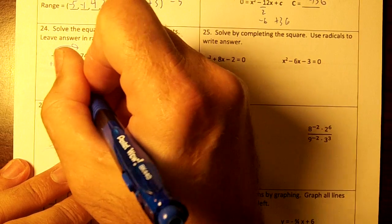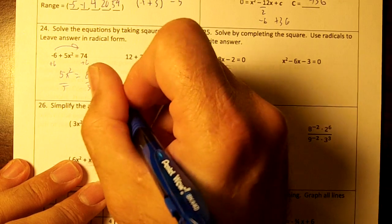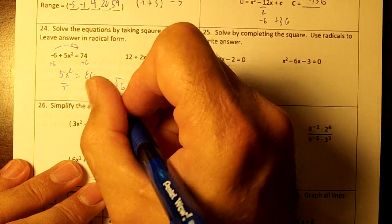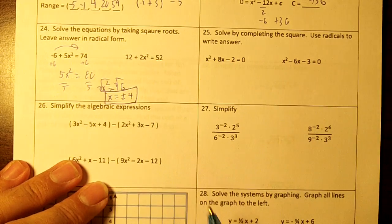I'm going to get 5x² equals 80. Divide by 5. I get x² equals 16. And if you take the square root, you get plus or minus 4.